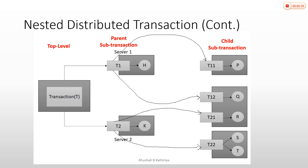When a transaction fails, its sub-transactions must fail too. If the parent transaction fails, the child transaction must also fail. However, if a sub-transaction fails, we cannot automatically say that the parent T1 is also failed or aborted. When a sub-transaction fails, the parent transaction could fail or an alternative action could be taken.